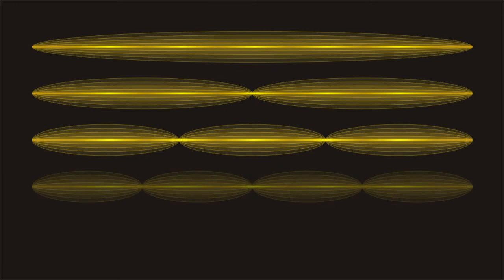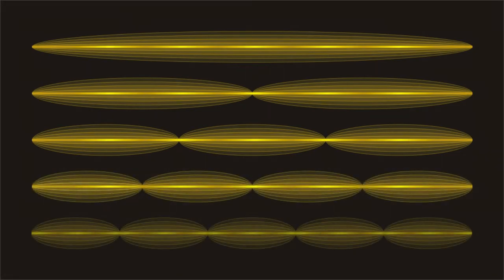In reality, the string does vibrate along its entire length at its lowest pitch and frequency. But the string simultaneously vibrates at one-half its length at twice the frequency, one-third its length at three times the frequency, one-quarter of its length at four times the frequency, one-fifth its length at five times the frequency, on and on, ad infinitum.